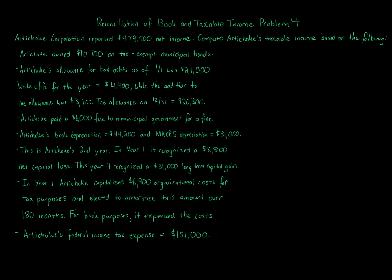Artichoke earned $10,700 on tax-exempt municipal bonds. Artichoke's allowance for bad debts as of January 1st was $21,000. Write-offs for the year equaled $4,400, while the addition to the allowance was $3,700. The allowance on December 31st was $20,300. Artichoke paid a $6,000 fine to a municipal government.